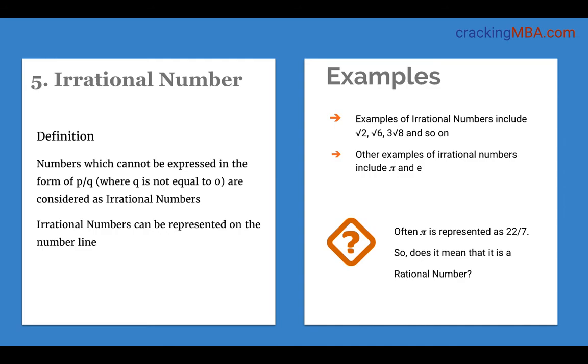Next, we come to irrational numbers. Irrational numbers are those which cannot be expressed in the form of P by Q where Q not equal to 0. They are lying on the number line but they consist of all the real numbers which are not rational numbers. Some of the examples of irrational numbers include root 2, root 6 and another famous irrational number is pi and E.